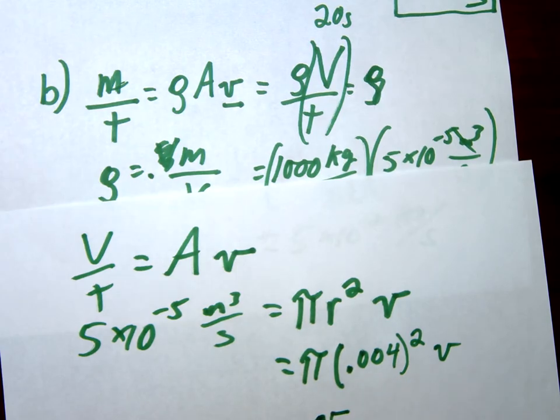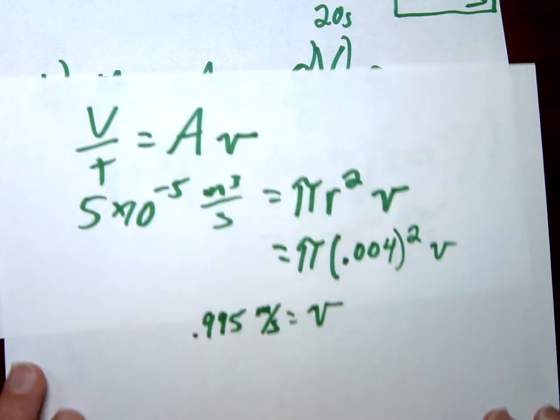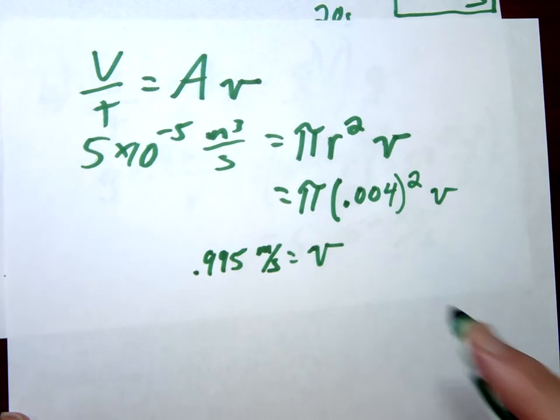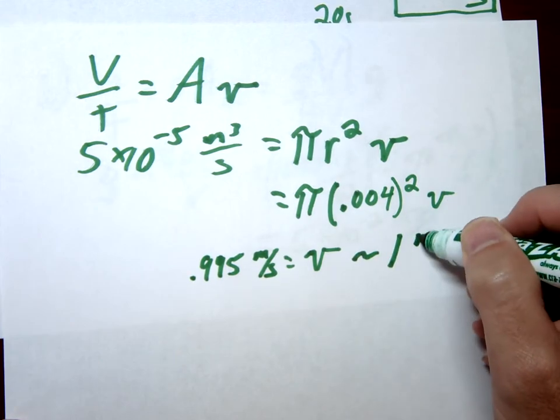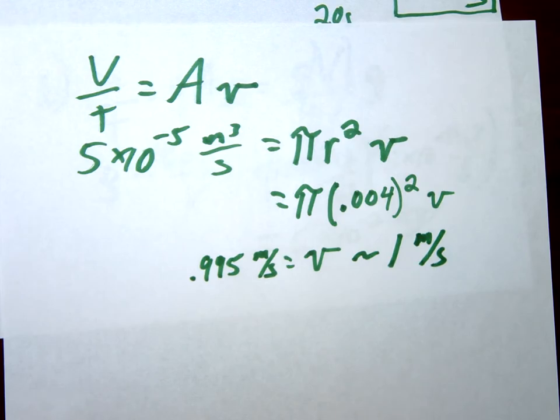See when I do it, I get .995 meters per second. Or, you know, for simplicity, for conceptual sake, let's just say it's 1. 1 meter per second.